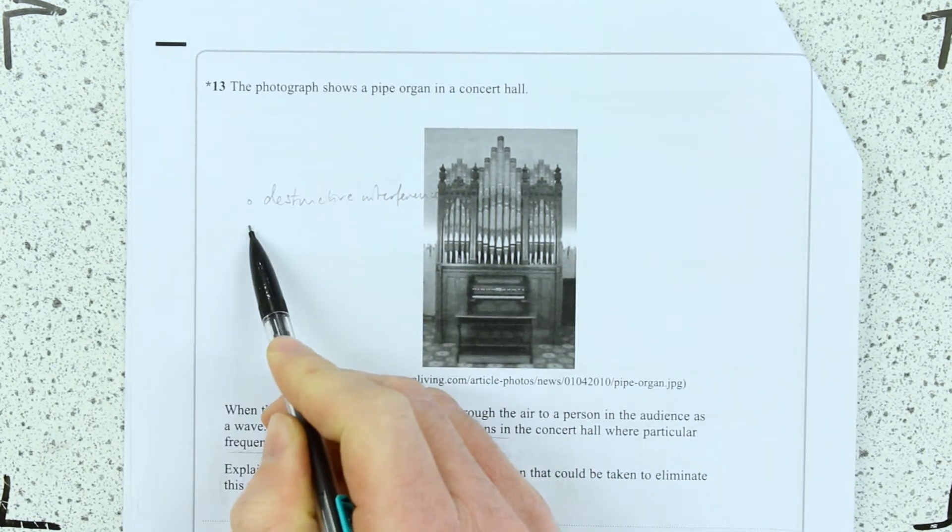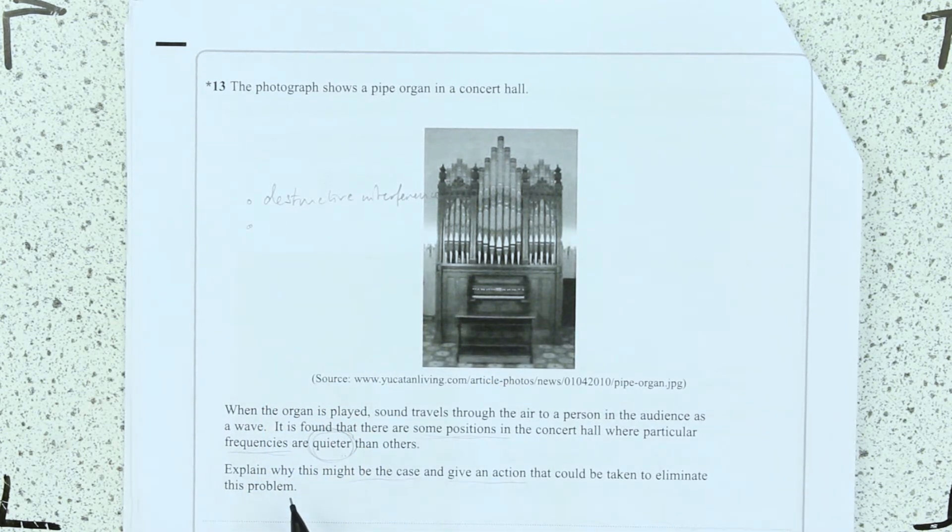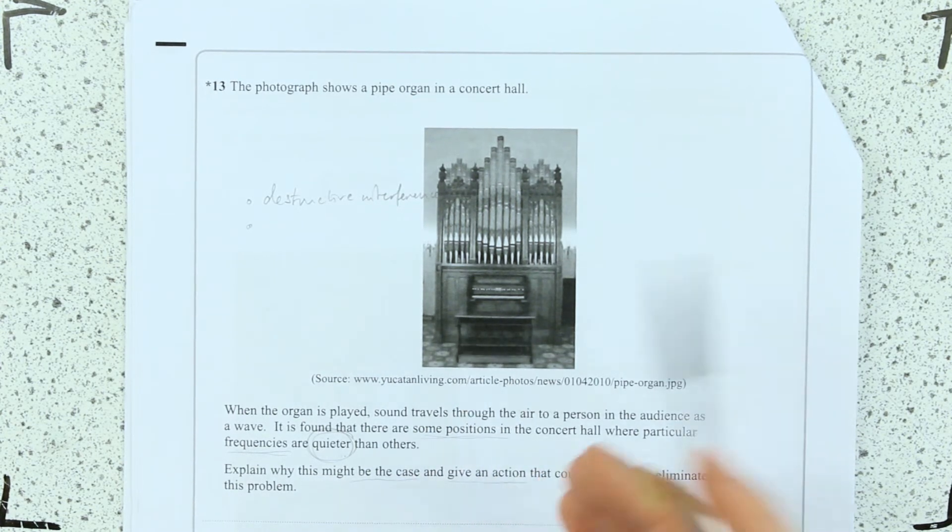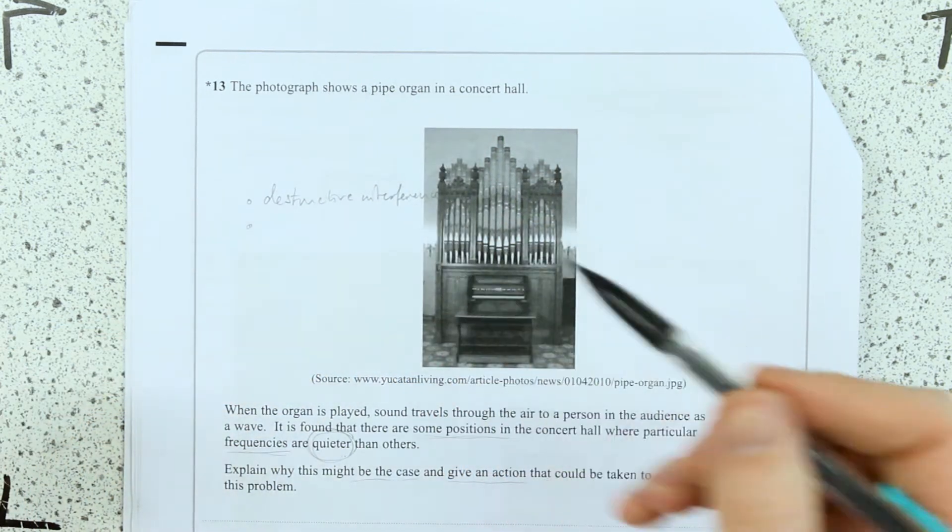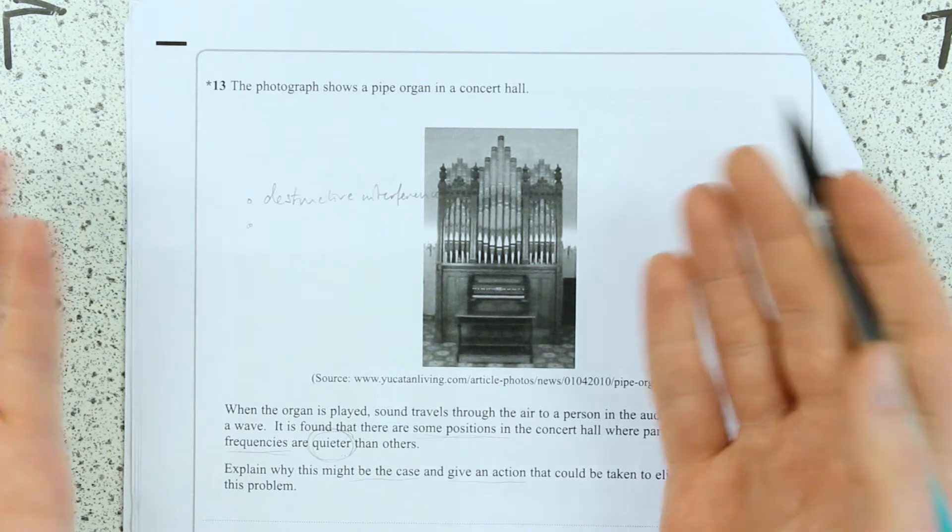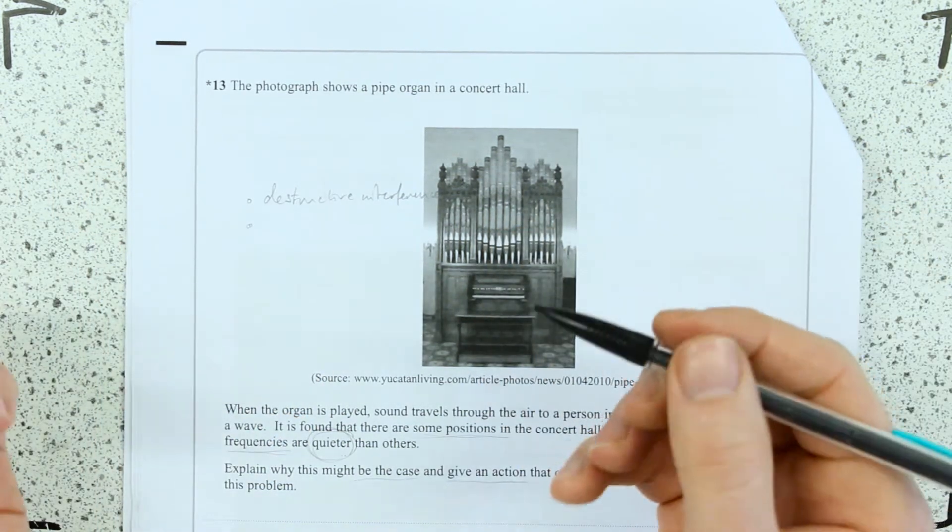So actually the first thing I'm going to talk about is I'm going to define for the examiner destructive interference. And then once I've done that, then I'm going to apply it to this situation here. So I'm going to talk about these sound waves travelling out. Destructive's when two waves meet, so there's got to be maybe some reflections because it's only releasing one wave producing one wave.